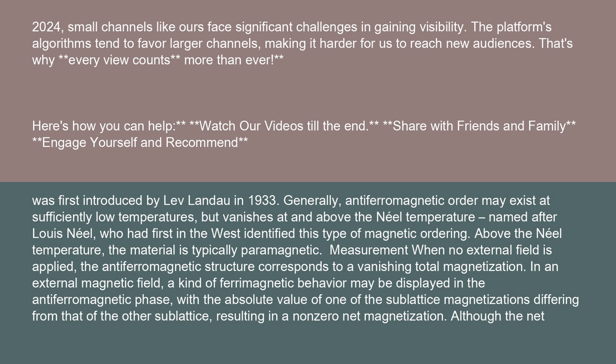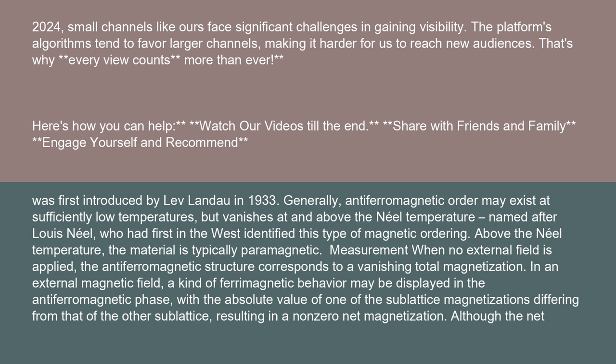When no external field is applied, the antiferromagnetic structure corresponds to a vanishing total magnetization. In an external magnetic field, a kind of ferromagnetic behavior may be displayed in the antiferromagnetic phase, with the absolute value of one of the sublattice magnetizations differing from that of the other sublattice, resulting in a non-zero net magnetization. Although the net magnetization should be zero at absolute zero, the effect of spin canting often causes a small net magnetization to develop, as seen for example in hematite.